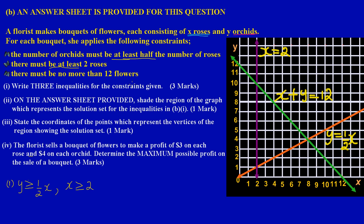The third constraint states there must be no more than twelve flowers. Since x represents roses and y represents orchids, the inequality is x + y ≤ 12. 'No more than' means the total number of flowers — orchids plus roses combined — must be less than or equal to 12. You can have eight, nine, or twelve flowers, but you cannot have thirteen.